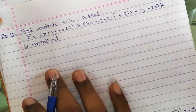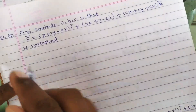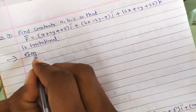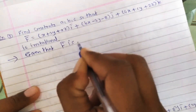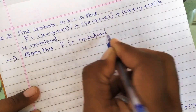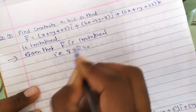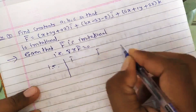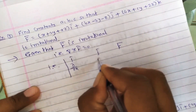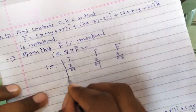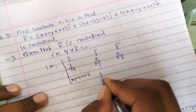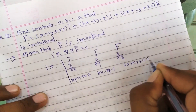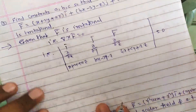Next problem: find constants a, b, c so that F̄ is irrotational. Given that ∇ × F̄ = 0, use this to find the values of a, b, c. Set up the determinant with first row î, ĵ, k̂; second row ∂/∂x, ∂/∂y, ∂/∂z; third row (x + 2y + az), (bx − 3y − z), (4x + cy + 2z). The value of this determinant is given as 0.